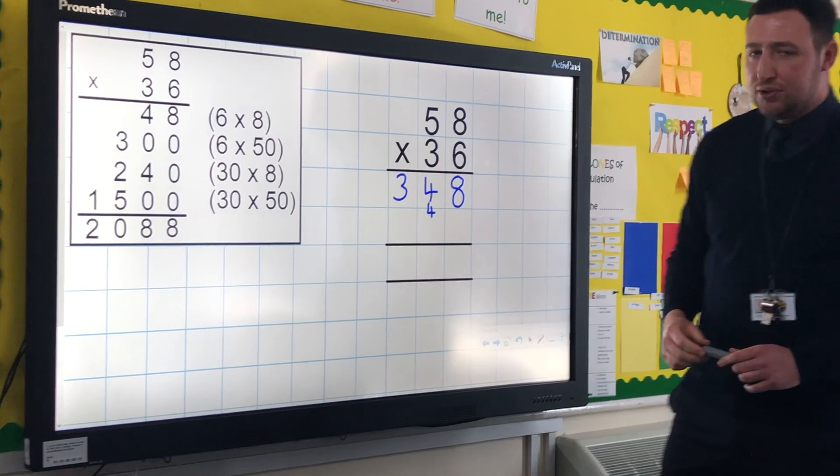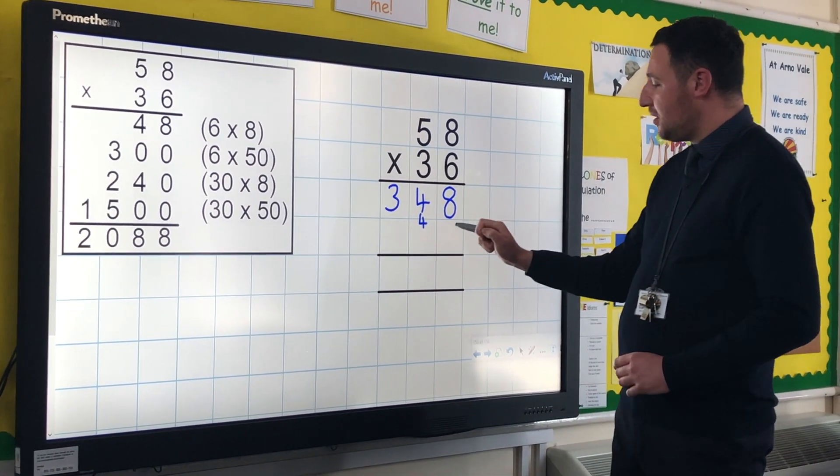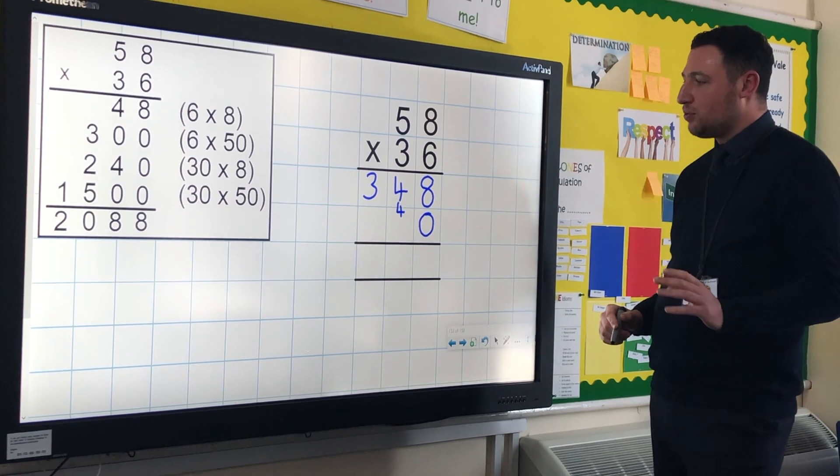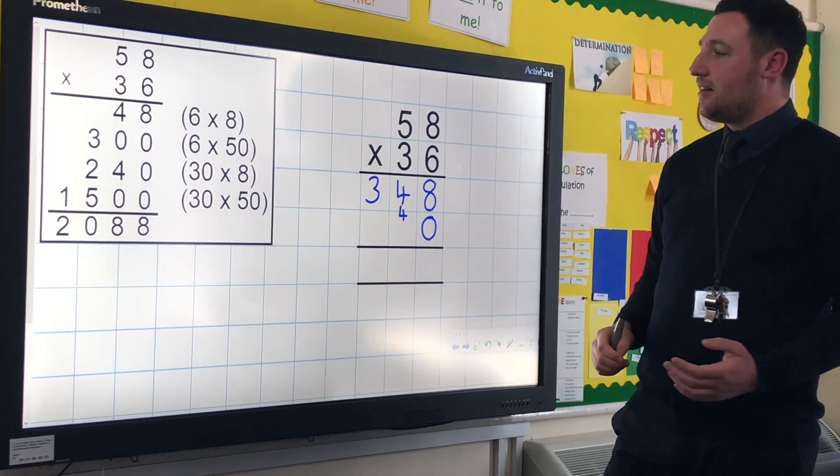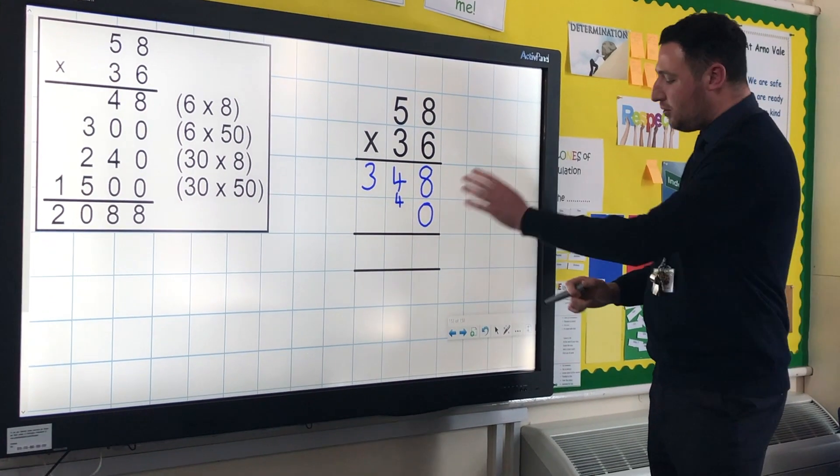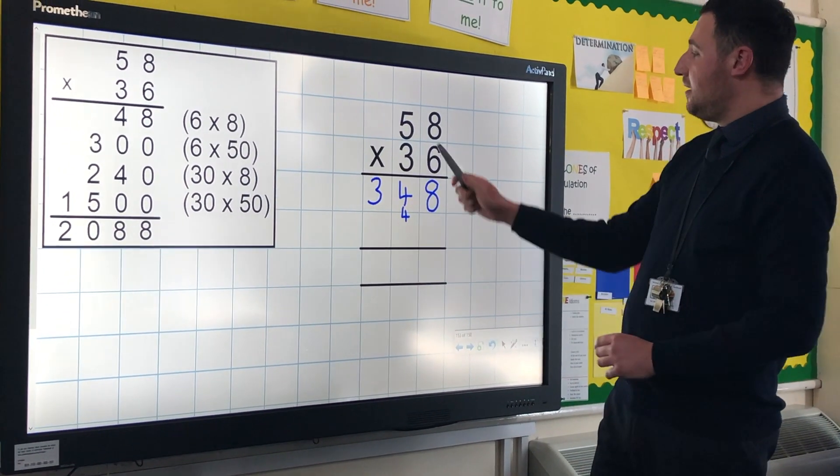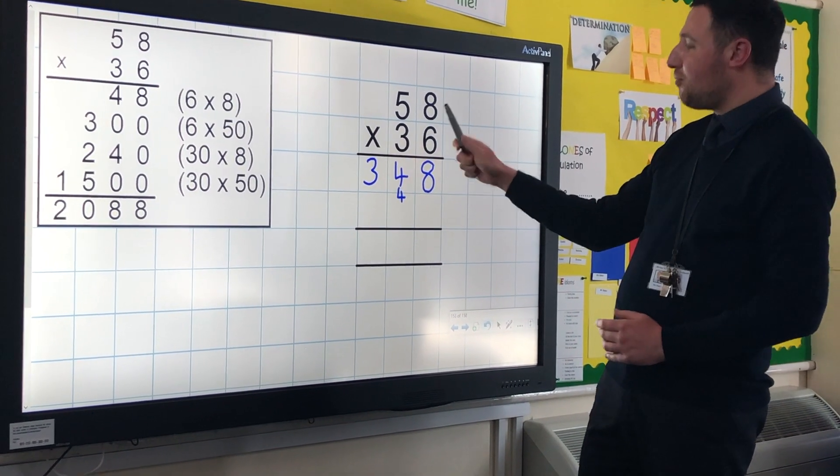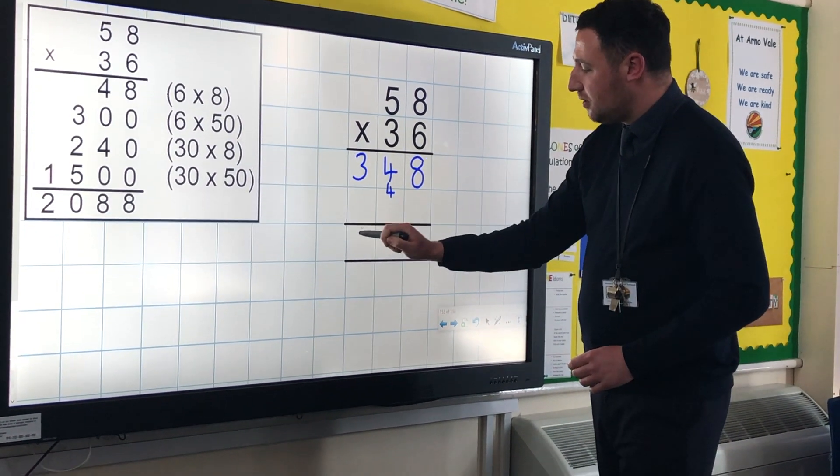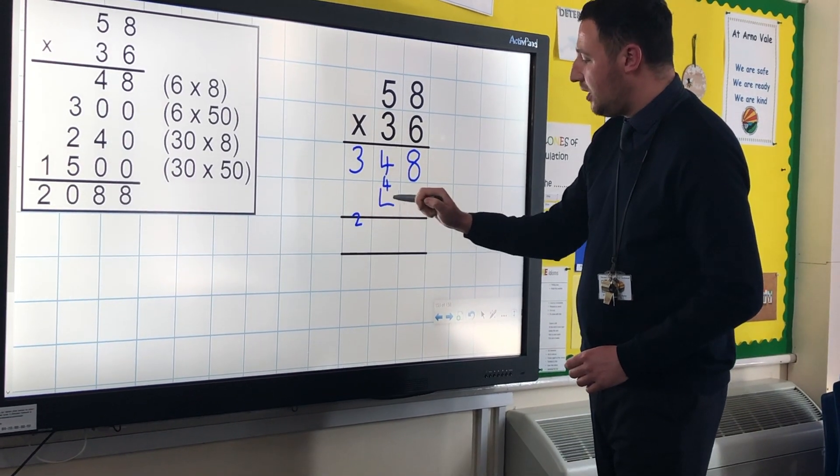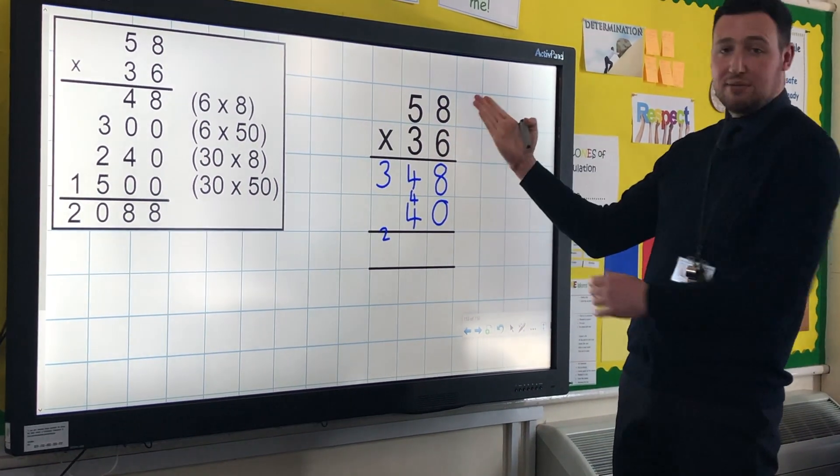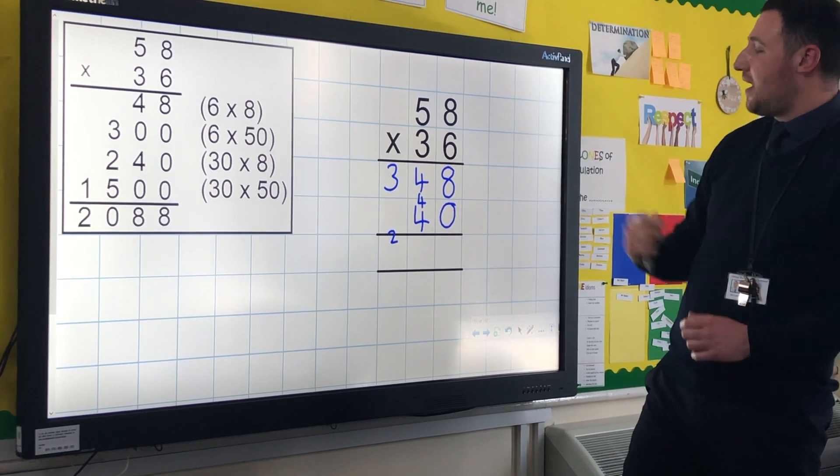Now this next bit is the most important bit because I remember when I was at school I was told at this point you put a zero there and just carry on. And we categorically cannot have that, because anyone that does that has not got the understanding of how this works. They might get the right answer but they're not understanding, they're not applying what they've learned previously. We don't just put a zero there and carry on. The reason for that is that we're doing 30 lots of eight, it's not three lots of eight. 30 lots of eight is 240, and so that's two in the hundreds, a four in the tens, and that's where that zero comes from. It's not just putting in a zero and doing three times eight, because three times eight is 24, it's not 24, it's 30 lots of eight which is 240.